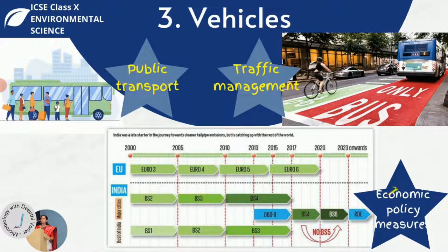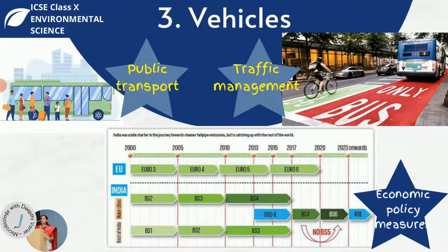Economic policy measures must also be taken by governments. Less tax and duty is levied on fuel-efficient vehicles to encourage people to buy them. More license fees and taxes are applied to older vehicles that do not conform to current environmental laws. There is less tax on fuels like compressed natural gas as an incentive for people to use CNG, which is good for the environment. Mandatory use of low-polluting or non-polluting vehicles, especially in government fleets, has been implemented in Delhi — all buses are required to use CNG as fuel.